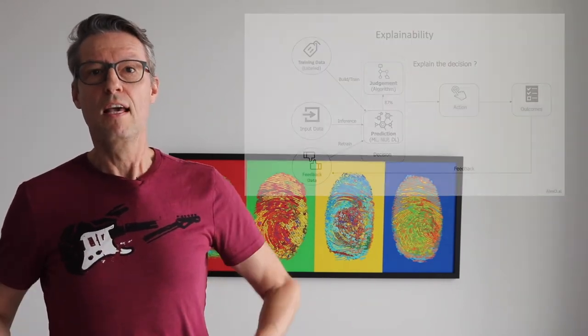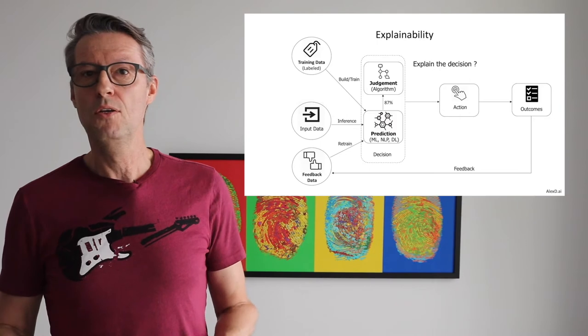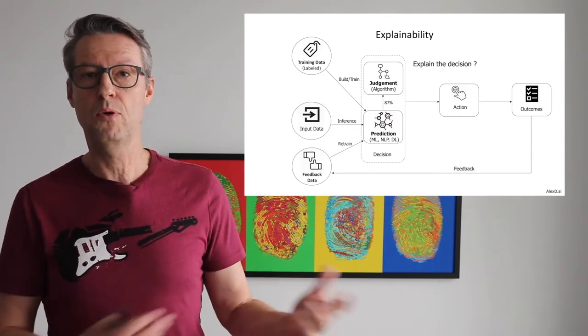Maybe in this situation, if you need explainability and if it's possible, you can use, for example, a Decision Tree, because it's a kind of algorithm where it's easy to get an explanation for why the result was the one you received after you run your model. Explainability is important — you need to understand whether you need it or not before you decide which kind of AI algorithm you will use.